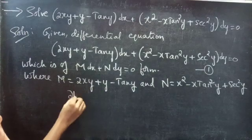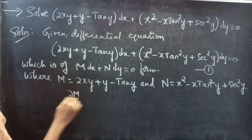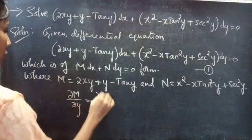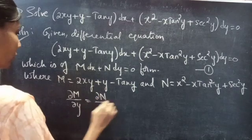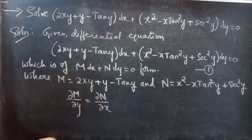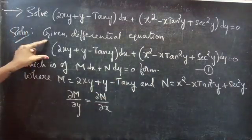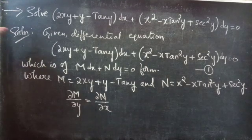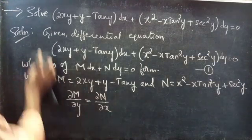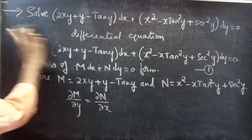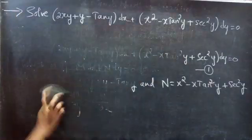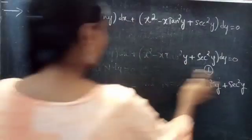If the partial derivative of M with respect to y is equal to the partial derivative of N with respect to x, then we can say that the given differential equation is an exact equation. So let's find ∂M/∂y and ∂N/∂x.